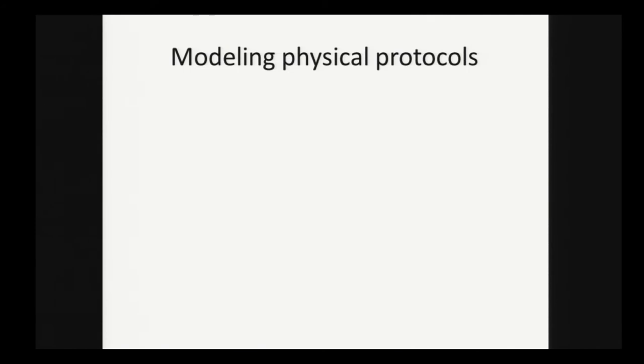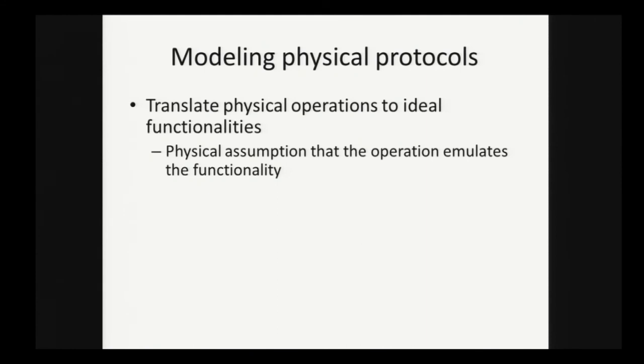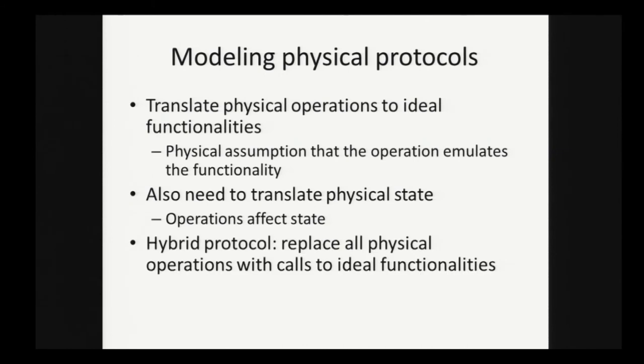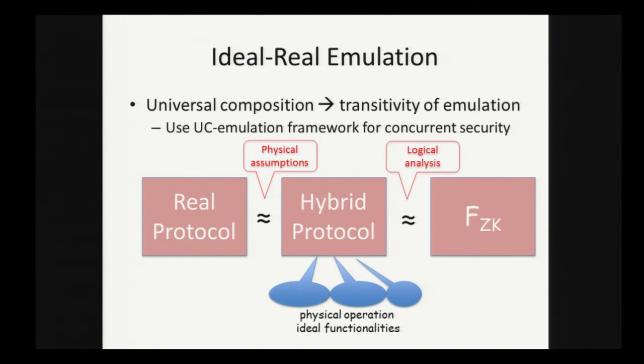In the time that remains, I'm going to say a few words about modeling. We translate physical operations to ideal functionalities, and we also need to translate the physical state and how the operations affect state. The basic idea is that the hybrid protocol will replace all physical operations with calls to their ideal functionalities, and in essence, this extracts the logical backbone of the protocol. We want to apply our logical analysis to the hybrid world protocol, to say that the hybrid protocol emulates some ideal functionality which we'll define. In essence, this captures that up to our physical assumptions, the real protocol has some kind of zero knowledge property.